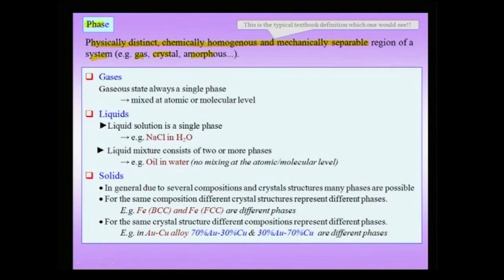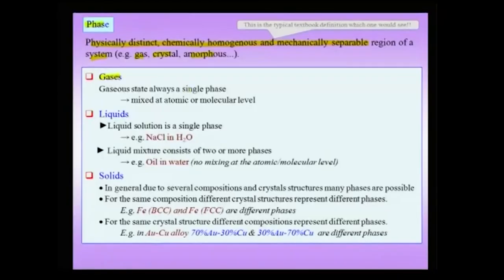Typically, if you look at gases, gases mix in all proportions. Suppose I take nitrogen and argon — I can take 1 percent nitrogen with 19 percent argon and mix it, or 19 percent oxygen with 1 percent hydrogen, etc. Therefore, mixing at an atomic level is complete in the gaseous state, and therefore the gaseous state always forms a single phase.